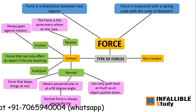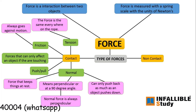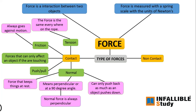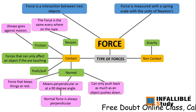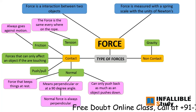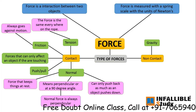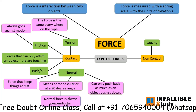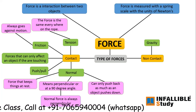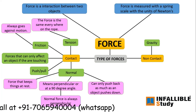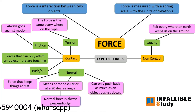Now let's talk about non-contact force. It is a type of force that is applied by one body to another body without touching. The first non-contact force is gravity. Gravity is a natural phenomenon by which all things with mass are attracted towards one another, including orbiting objects. The force of gravity keeps all of the planets in orbit around the sun, and we can feel gravity everywhere on Earth.